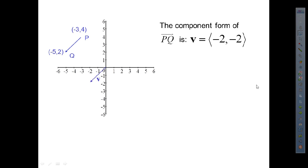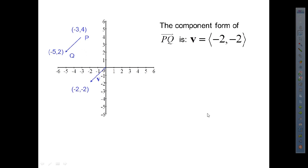The component form of vector PQ is the vector negative 2, negative 2. So these are equal vectors, and the magnitude is going to be the square root of negative 2 squared plus negative 2 squared. That's going to be 4 plus 4, which is 8. The square root of 8 gives us 2 root 2. So that's going to be the length of this vector.